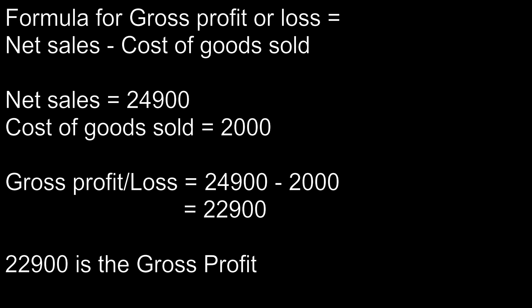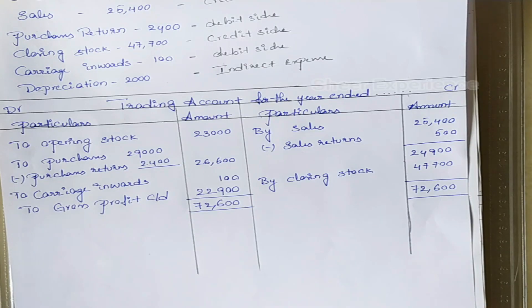Net sales value is 24,900. So gross profit or loss equals net sales minus cost of goods sold, which gives us 22,900 — this is our gross profit, and we mention it on the debit side. In case after deducting cost of goods sold from net sales we get a negative value, we call it gross loss, and gross loss is mentioned on the credit side.